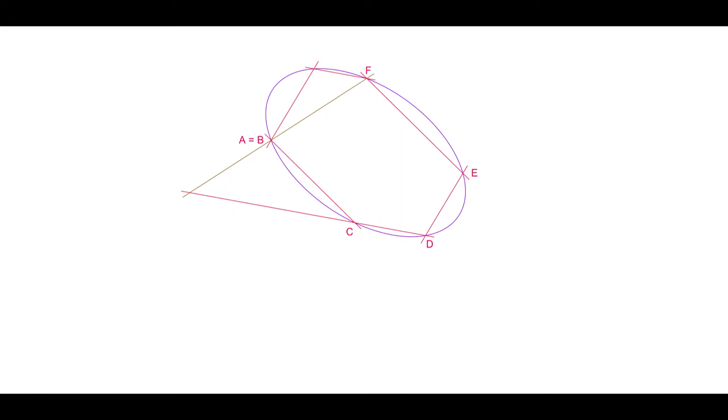Draw a line truncating the hexagon to a pentagon, and label the pentagon as a hexagon. The side at the double point will be the tangent. Next, draw the line connecting the intersection of FA and CD with the intersection of BC and EF, which in this case is infinitely distant. In other words, this is the line connecting intersections of opposite sides, also known as the Pascal line of the new five-cornered hexagon.